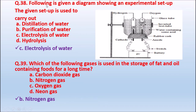Question 38: A diagram shows an experimental setup with two inverted test tubes in water containing some acid, connected to a battery with anode and cathode. The setup is used to carry out — Option A: distillation of water; Option B: purification of water; Option C: electrolysis of water; Option D: hydrolysis. The figure shows electrolysis of water — electrical decomposition. The correct answer is Option C: electrolysis of water.